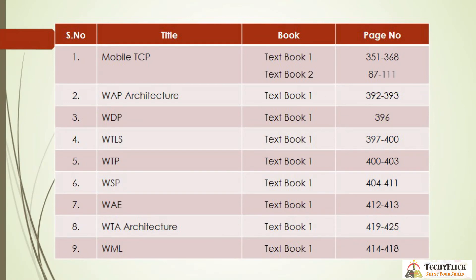The full forms for the WAP protocol stack are: WAP — Wireless Application Protocol; WDP — Wireless Datagram Protocol; WTLS — Wireless Transport Layer Security; WTP — Wireless Transaction Protocol; WSP — Wireless Session Protocol; WML — Wireless Markup Language; WTA — Wireless Telephony Applications.